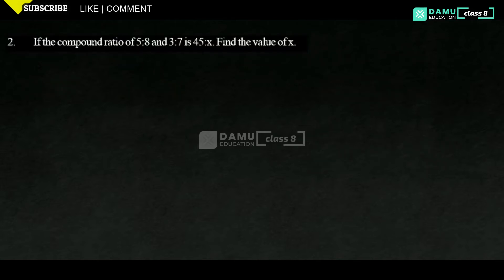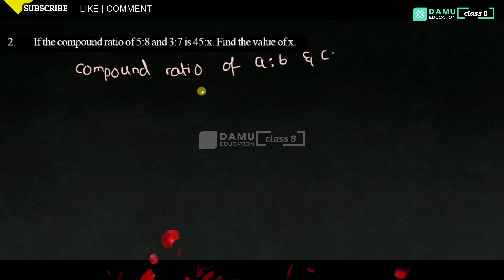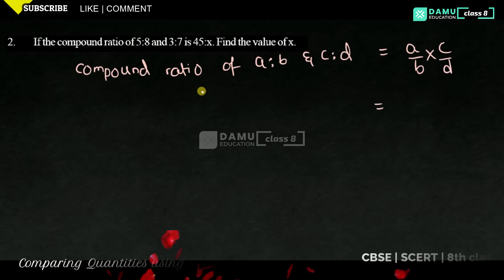Our second question is: the compound ratio of 5 is to 8 and 3 is to 7 is 45 is to x — find the value of x. We should know the formula before solving. The compound ratio of A is to B and C is to D is A by B into C by D, that is AC by BD.